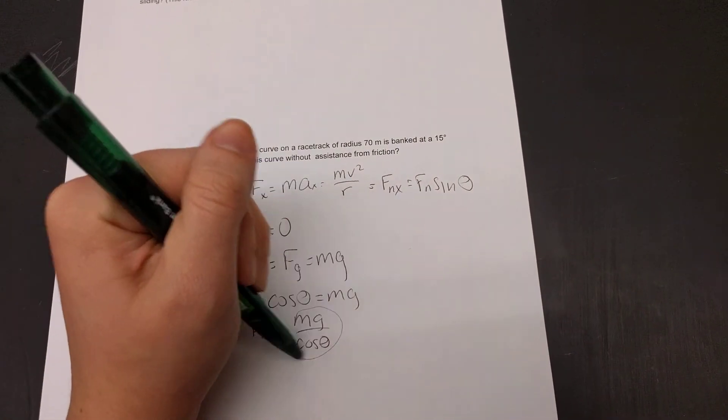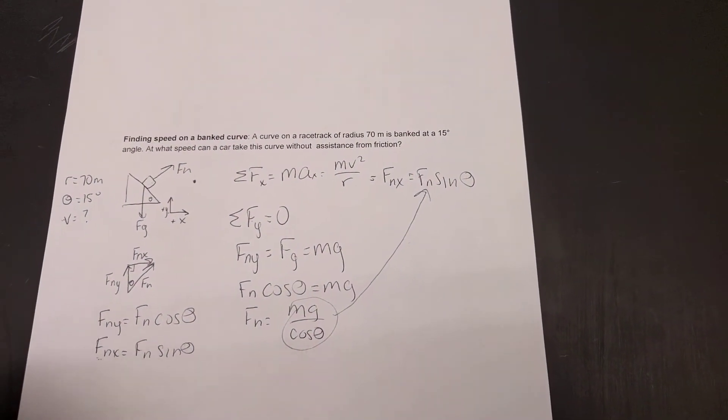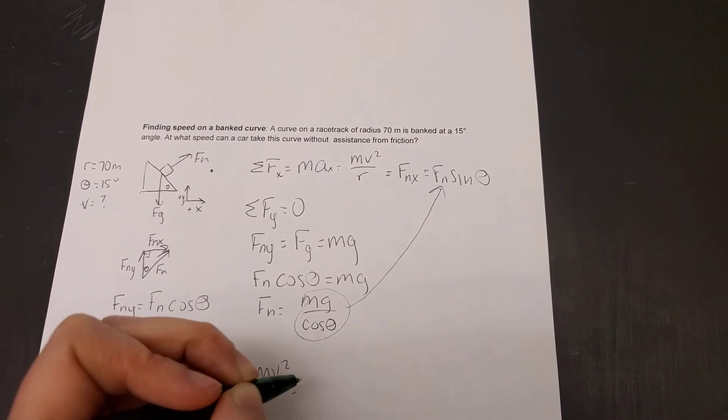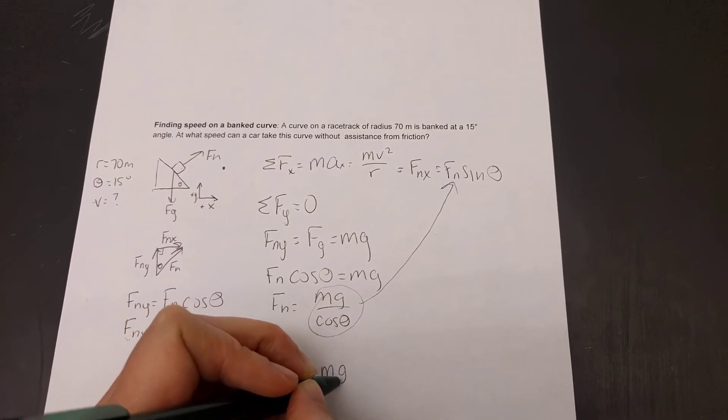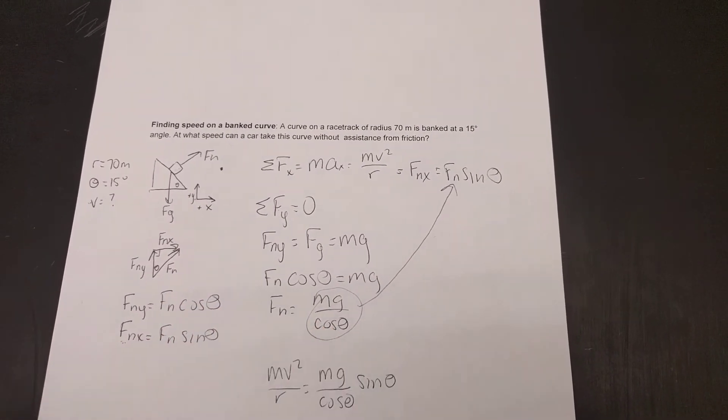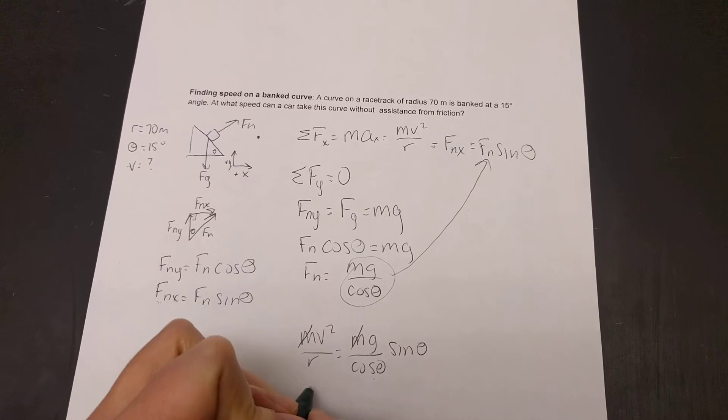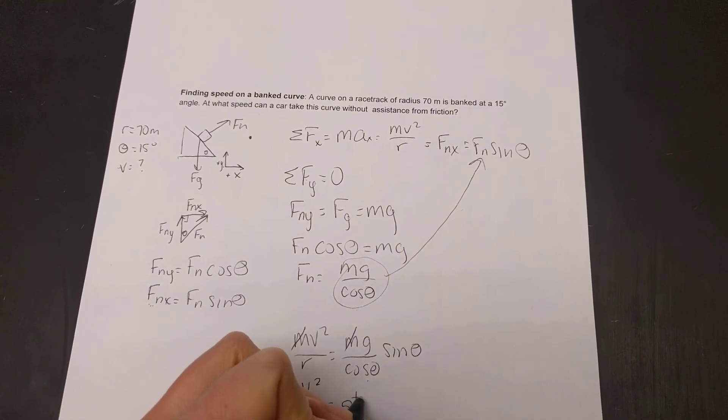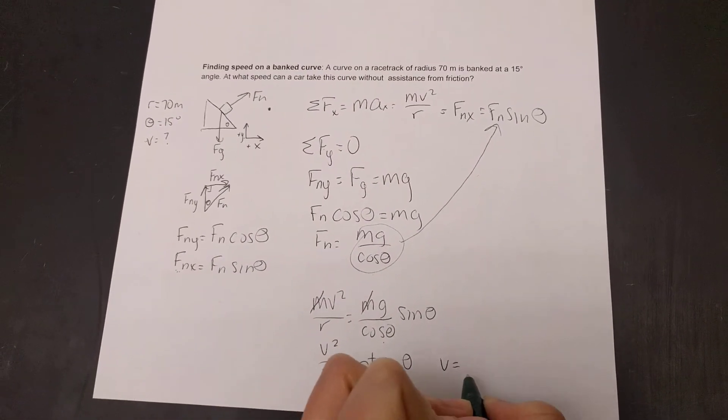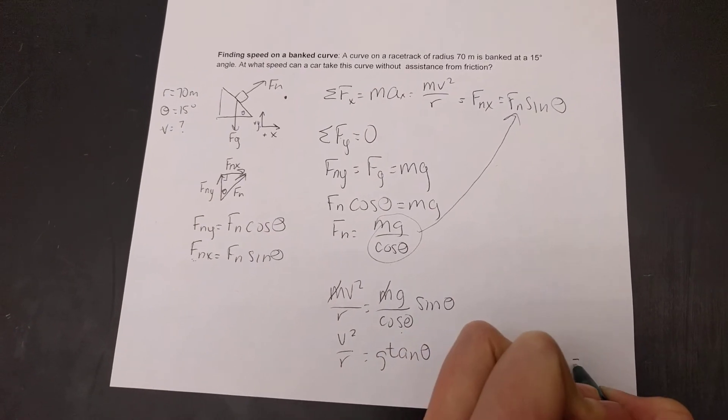So, now that I have an expression for my normal force, I can take this and plug it in up here. I have that mv squared over r is equal to my normal force, so mg divided by cosine theta, times sine of theta. Alright, so I can rearrange this and solve. My mass cancels out. Sine divided by cosine gives me tangent. So, I have v squared over r is equal to g tangent theta. So, solving for v, we have v is equal to the square root of gr tan theta. And when we plug in our numbers, I believe we get something about 14 meters per second.